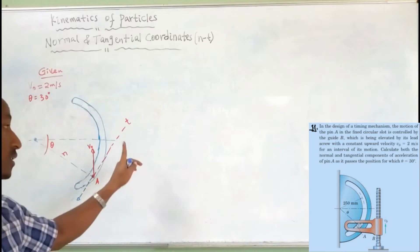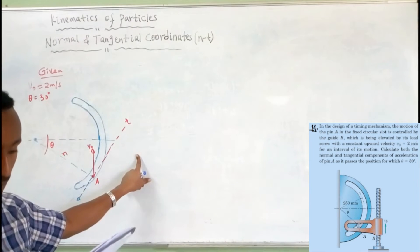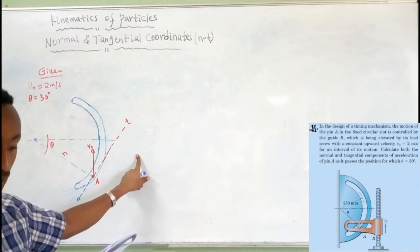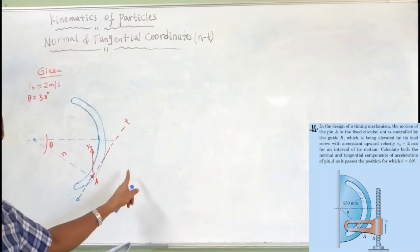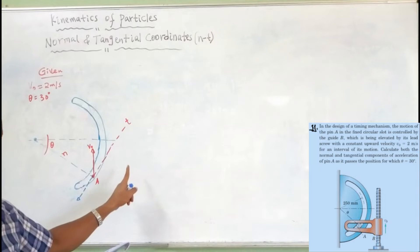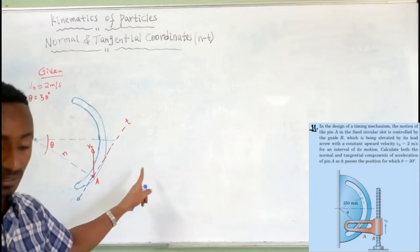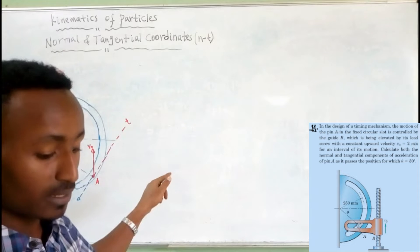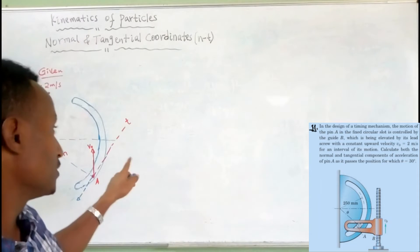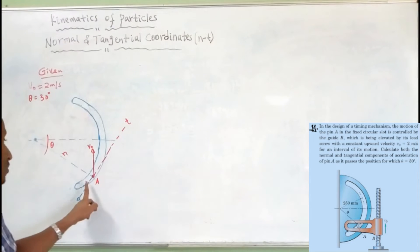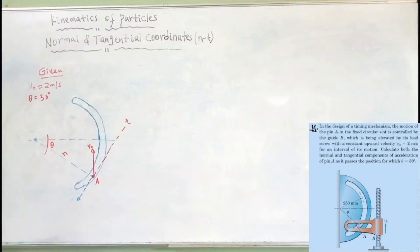Calculate the normal and the tangential acceleration of the PIN, not guide B or lead screw. Guide B is being elevated by its lead screw. Second: PIN A — tangential and normal acceleration.